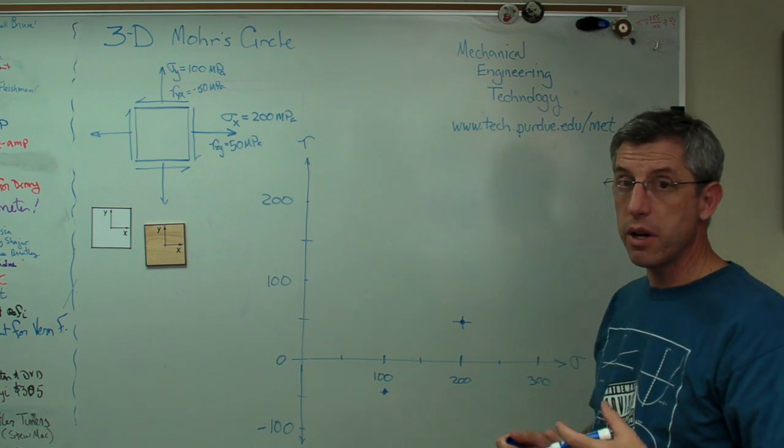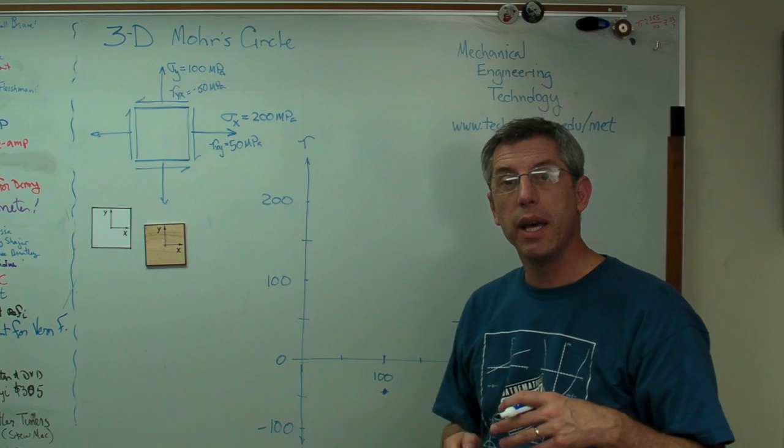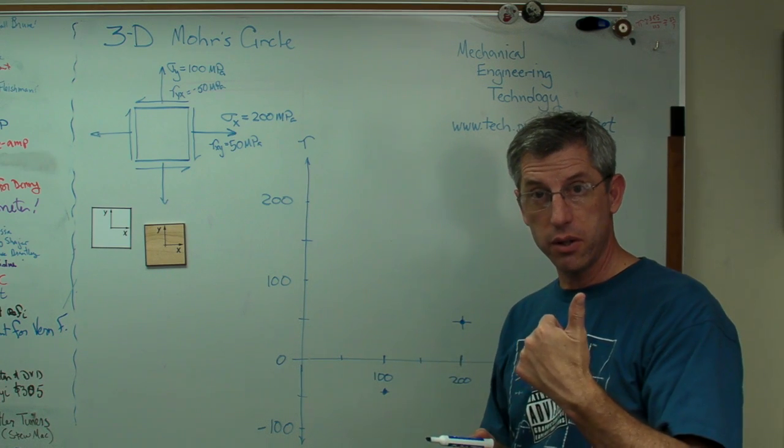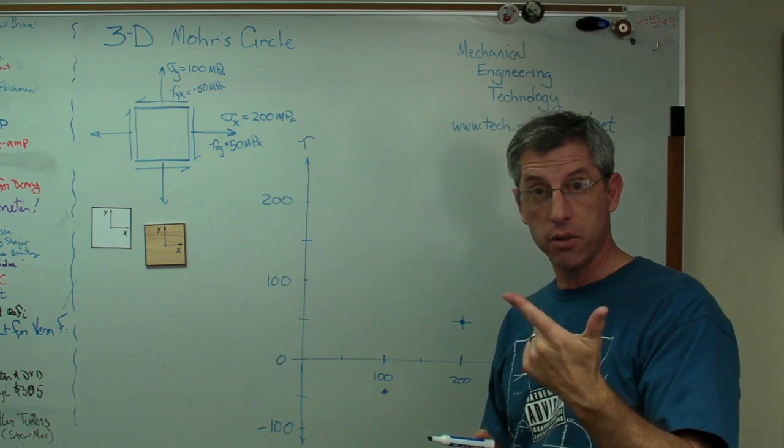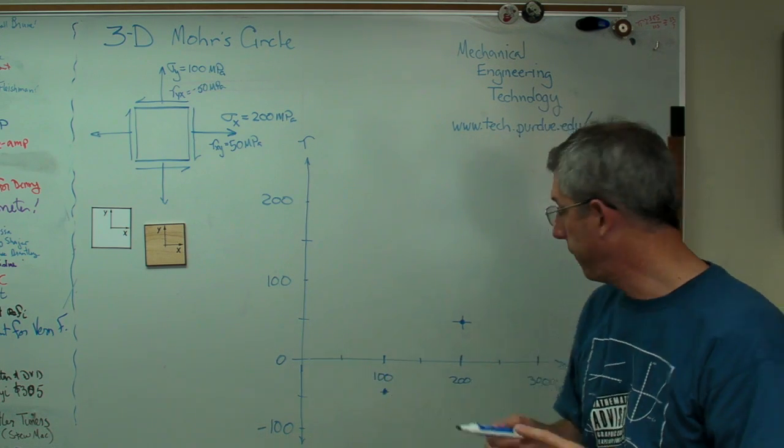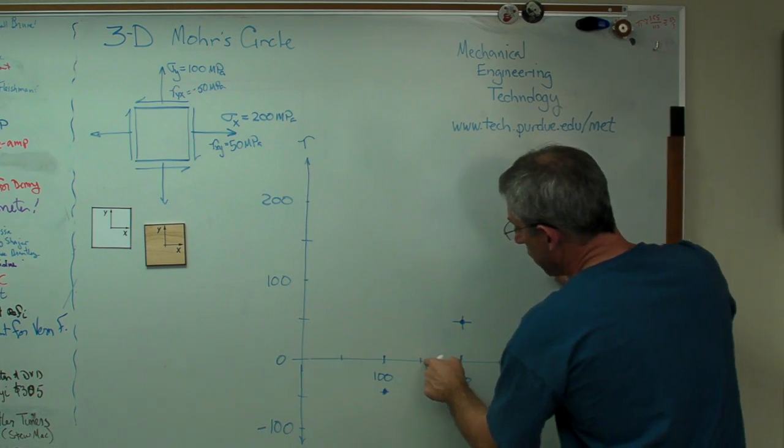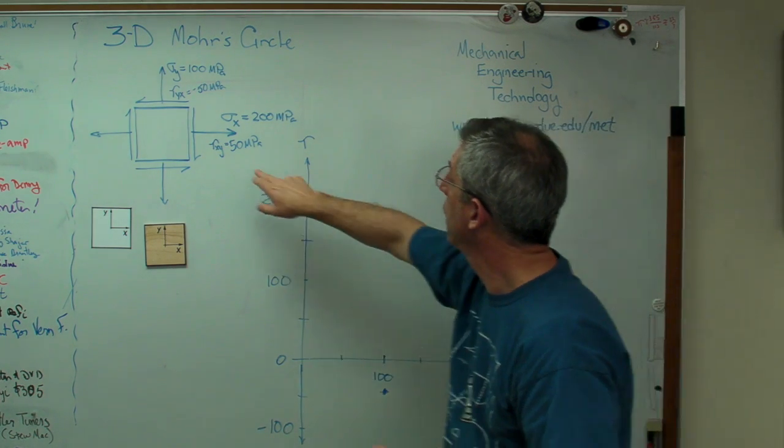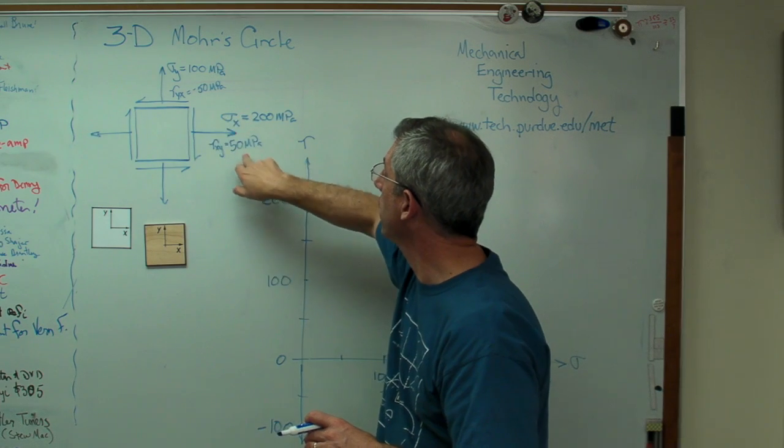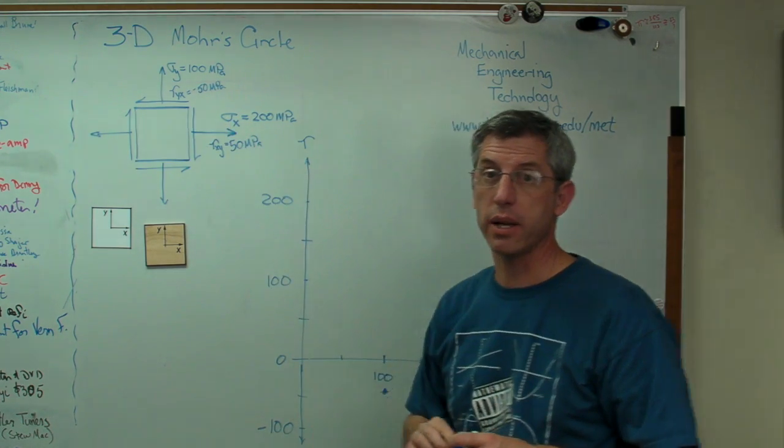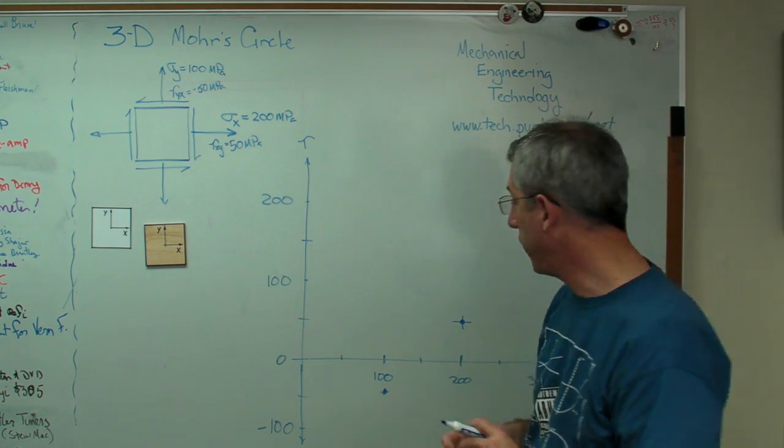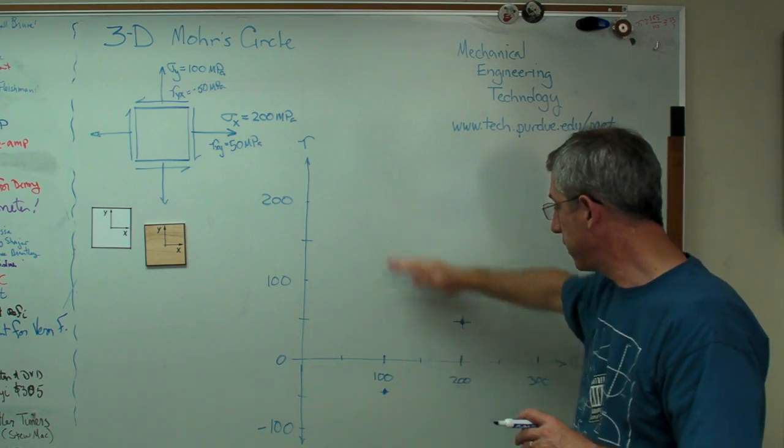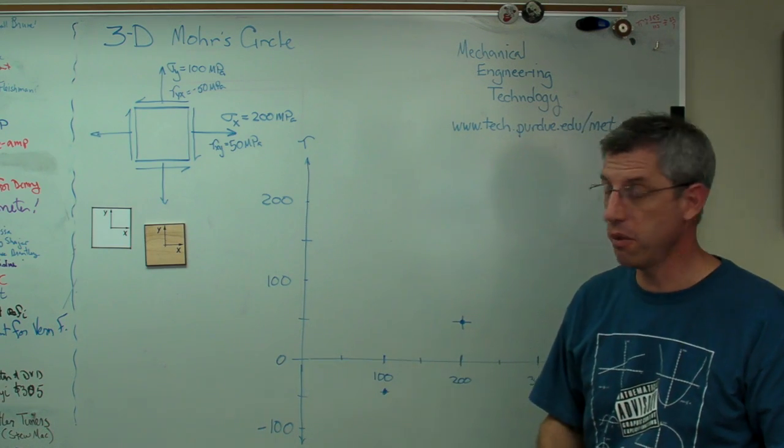Now, if I'm trying to draw a circle, like I'm trying to draw here, if I know the location of the center of the circle and its radius, I know everything there is to know about a circle. Well, there's the center right there. And the center always has to lie on this normal stress axis, because that and that are equal and opposite, tau xy and tau yx. If you're drawing a Mohr circle and it's not on this horizontal axis, it's up or down, stop. Something's wrong.